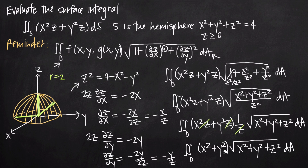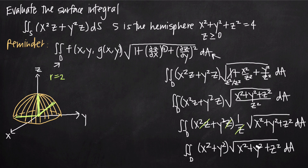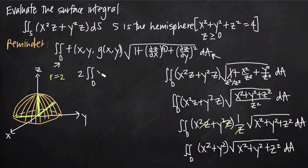Since x squared plus y squared plus z squared equals 4 according to our surface equation, we substitute 4 under the square root. The square root of 4 is 2, so we pull that out in front, giving us 2 times the double integral over region d of x squared plus y squared dA. At this point, we need to convert to polar coordinates to go any further.